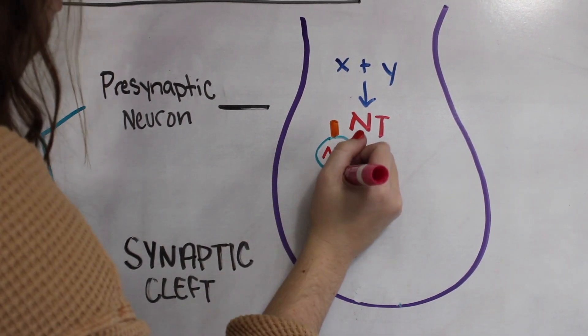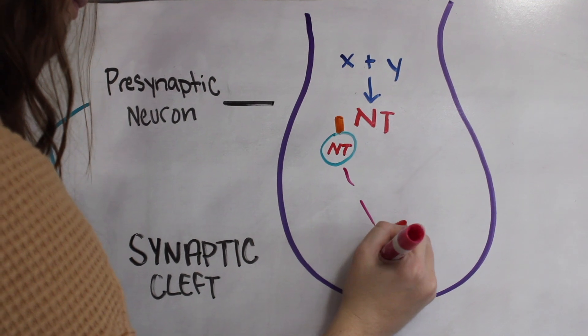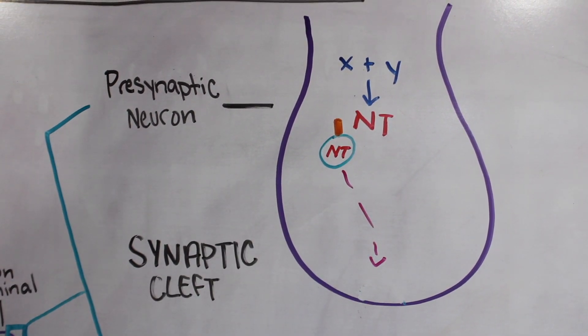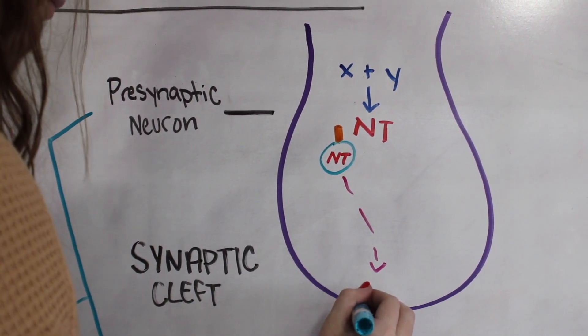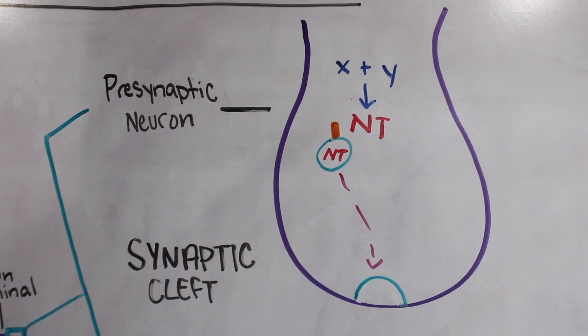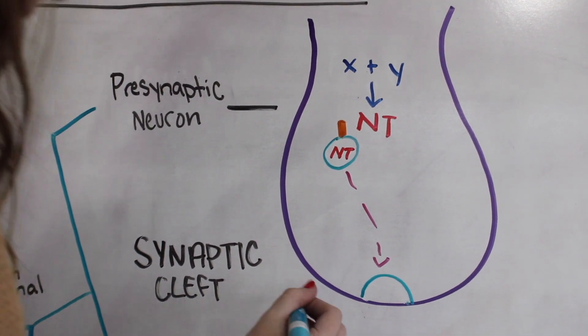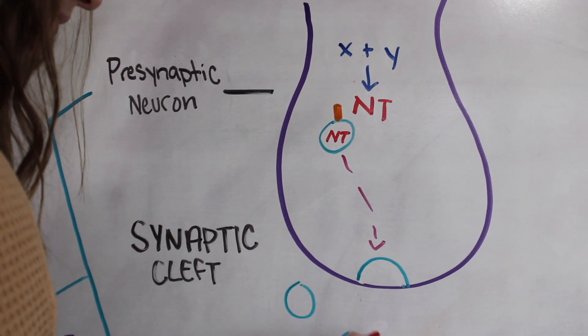Then comes the release. Release of a neurotransmitter only occurs as the result of an action potential. To briefly explain, an action potential depolarizes the axon terminal of the presynaptic neuron, causing calcium ions to rush into the cell.